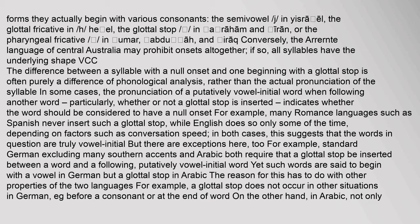Standard German and Arabic both require that a glottal stop be inserted between a word and a following putatively vowel-initial word, yet such words are said to begin with a vowel in German but a glottal stop in Arabic. In German, a glottal stop does not occur in other situations, e.g. before a consonant or at the end of a word. In Arabic, not only does a glottal stop occur in such situations, but it also occurs in alternations clearly indicative of its phonemic status.